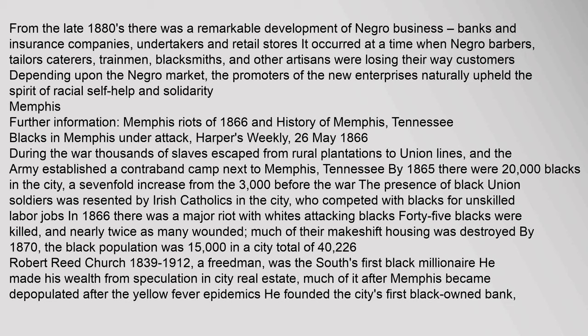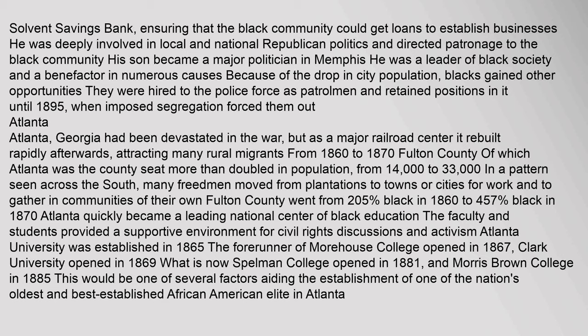Robert Reed Church (1839–1912), a freedman, was the South's first black millionaire. He made his wealth from speculation in city real estate, much of it after Memphis became depopulated after the yellow fever epidemics. He founded the city's first black-owned bank, Solvent Savings Bank, ensuring that the black community could get loans to establish businesses. He was deeply involved in local and national Republican politics and directed patronage to the black community. Because of the drop in city population, blacks gained other opportunities and were hired to the police force as patrolmen, retaining positions until 1895 when imposed segregation forced them out.